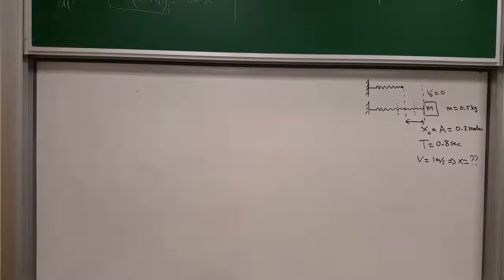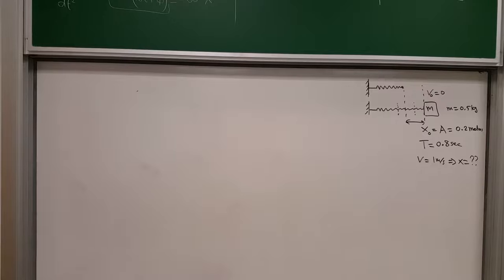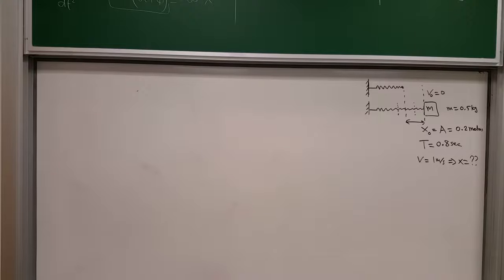Hi, welcome back. I would like to do this example from the book: a 500 gram block on a spring is pulled a distance of 20 centimeters and released. The subsequent oscillations are measured to have a period of 0.8 seconds. The first question asks at what position or positions is the block speed equal to 1 meter per second, and then what is the spring constant?